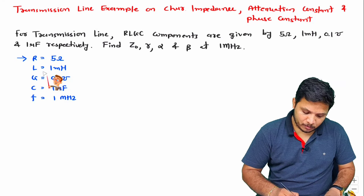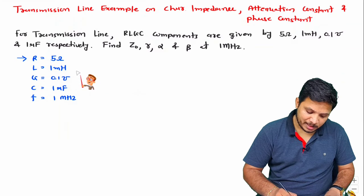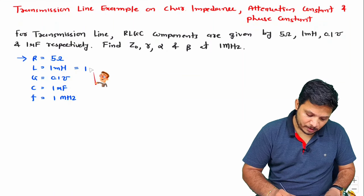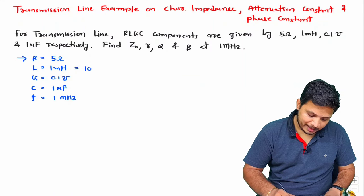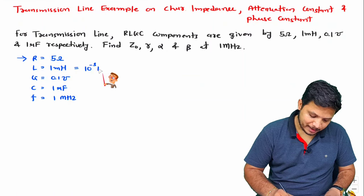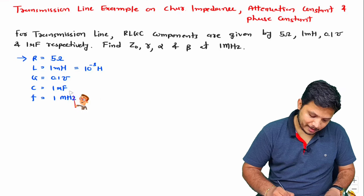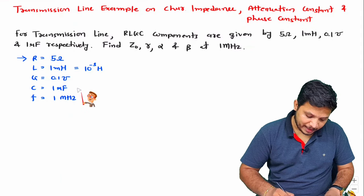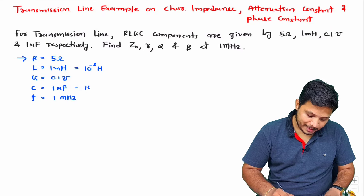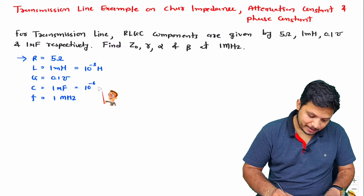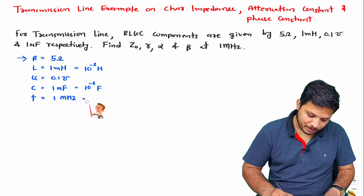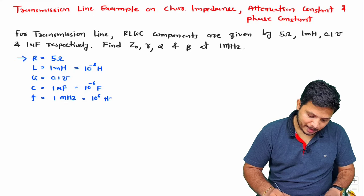Let's translate the given values: inductance L = 1 millihenry = 10^-3 henry, capacitance C = 1 microfarad = 10^-6 farad, and frequency f = 1 megahertz = 10^6 hertz.